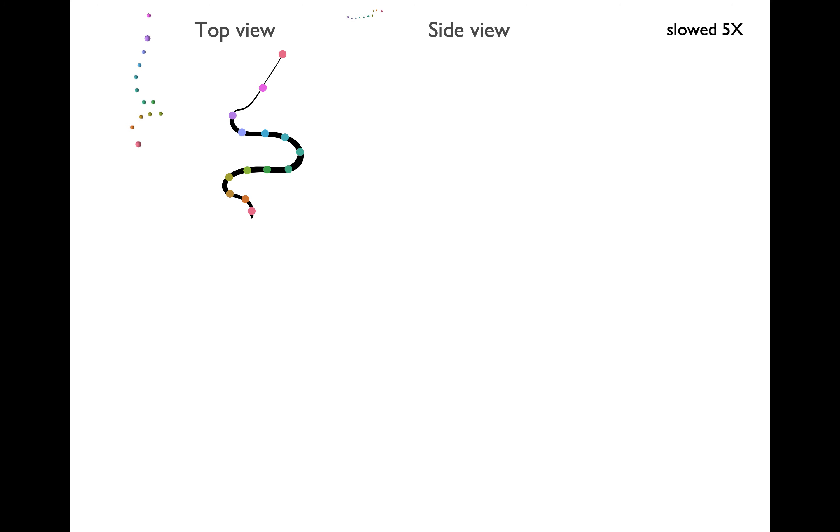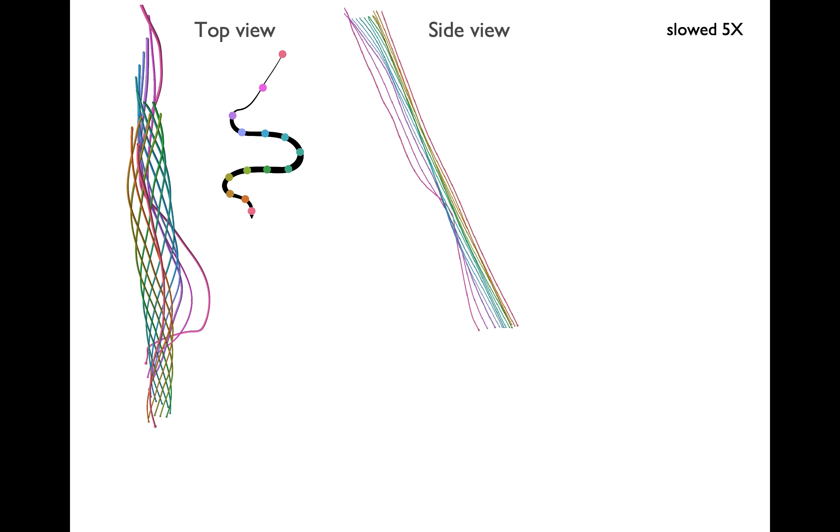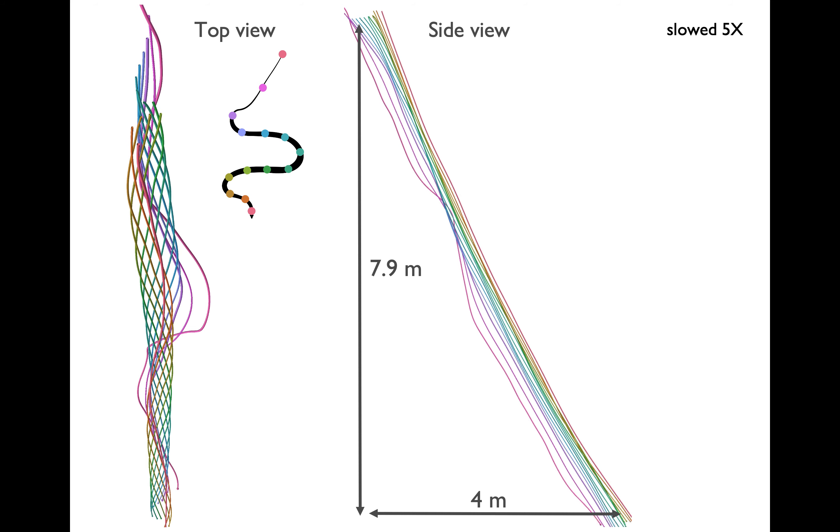This is what comes out of the motion capture system. Here's a glide that's got 14 markers along the body, each shown as a different color. From the top and side view, you can see that these markers make an interweaving pattern. In this particular case, we recorded about 8 meters of fall and 4 meters of horizontal distance.